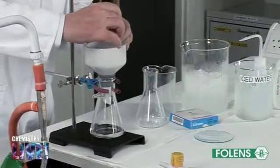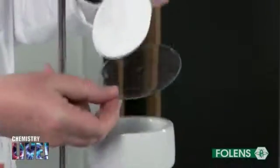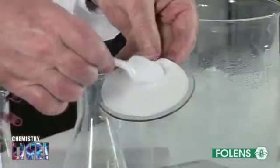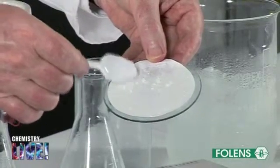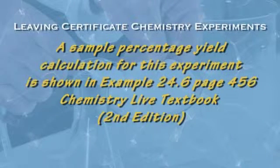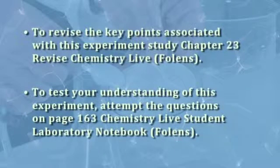Place the damp filter paper containing the crystals on a clock glass and allow the crystals to dry overnight. When the crystals have dried, use the laboratory balance to record the mass of benzoic acid crystals formed. Finally, calculate the percentage yield of benzoic acid as shown in the Chemistry Life textbook. This concludes the experiment.